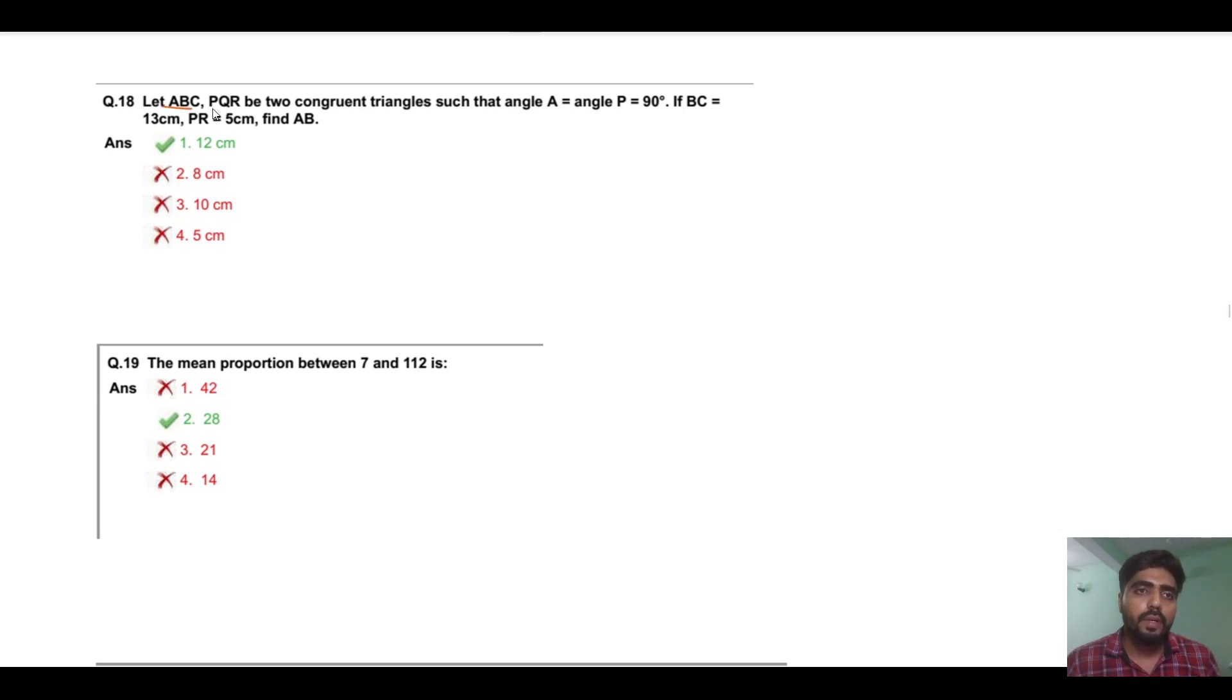Let ABC and PQR be two congruent triangles such that angle A equals angle P equals 90 degrees. If BC equals 13 and PR equals 5, then find AB.